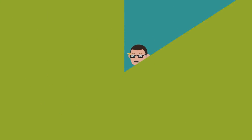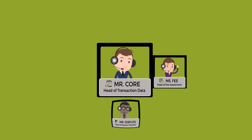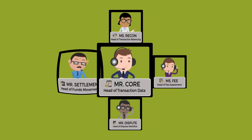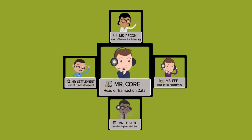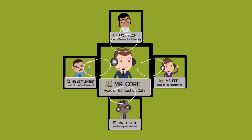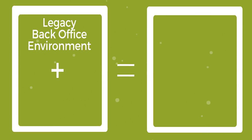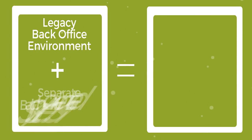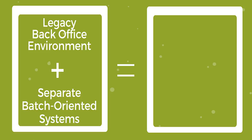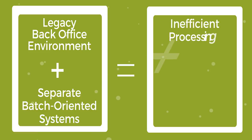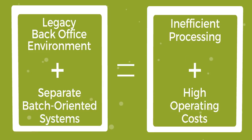In our example, Ms. Fee, Mr. Dispute, Ms. Recon, and Mr. Settlement work out of separate offices. Notice there are no doors to connect their offices. As a result, the back-office employees cannot communicate with each other. This demonstrates a legacy back-office environment where functions are performed by separate batch-oriented systems that do not work together, resulting in inefficient processing and high operating costs.